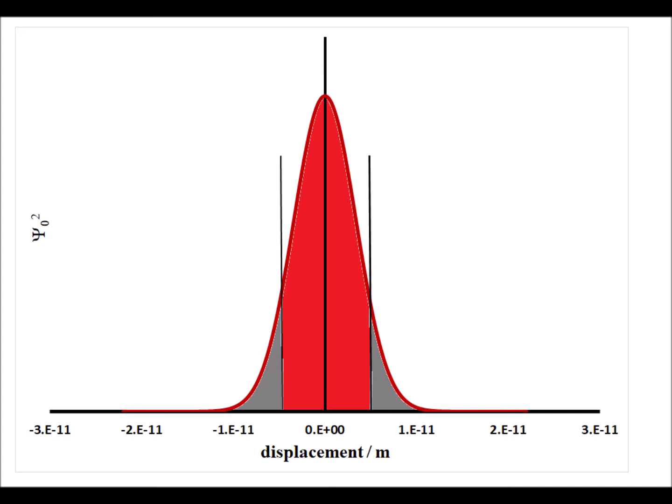Again, for the n equals zero ground state, but now we have shaded in gray when the oscillator is beyond the classical limit, which is for both limits, and the red probability is the probability that is within the classical limit.